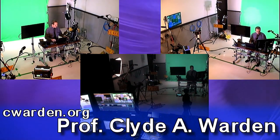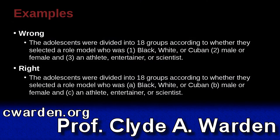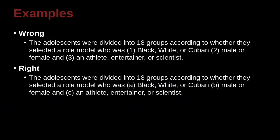Now we're going to look at some examples of this fairly straightforward topic of headings and numbers. The adolescents were divided into 18 groups according to whether they selected a role model who was: one, black, white, or Cuban; two, male or female; and three, an athlete, entertainer, or scientist.